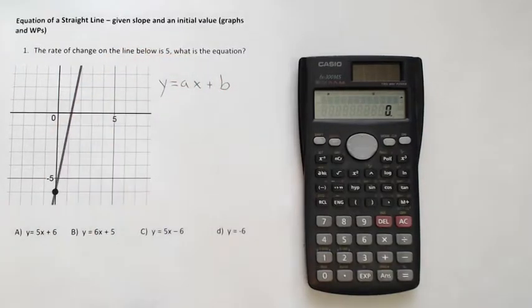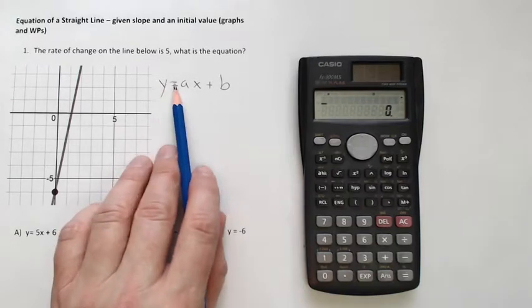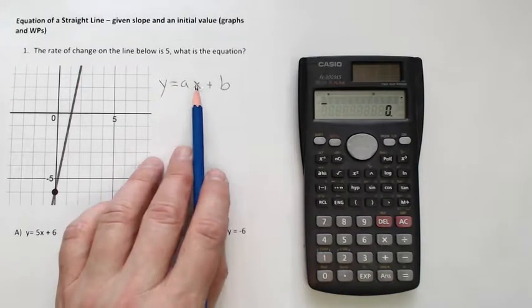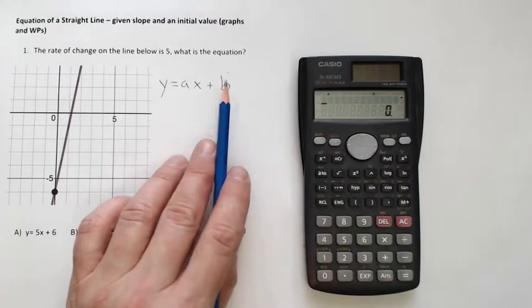And we know this is going to get drilled into our head, right? y is equal to ax plus b. The dependent variable will equal the slope or the rate of change times the independent variable plus an initial value.